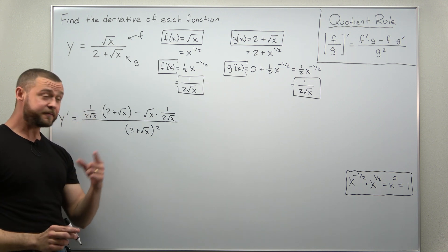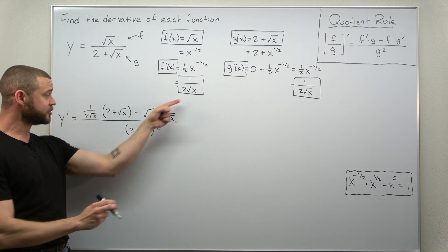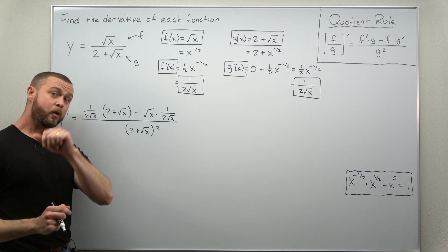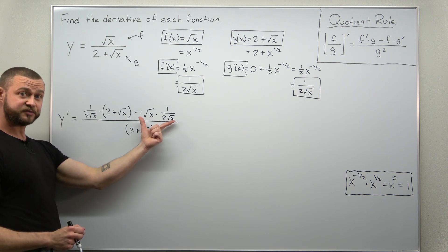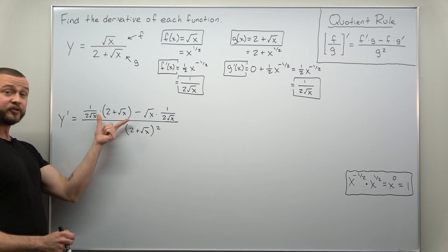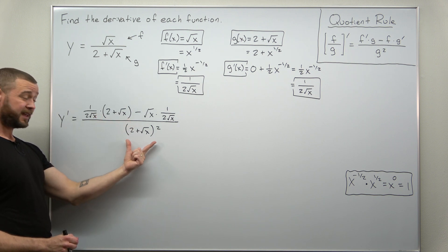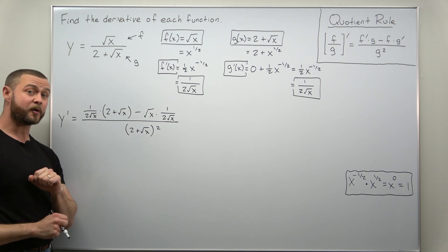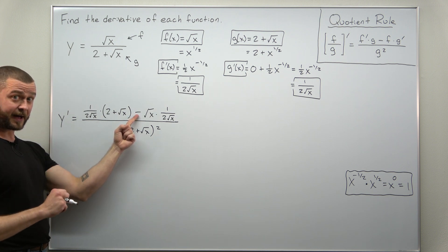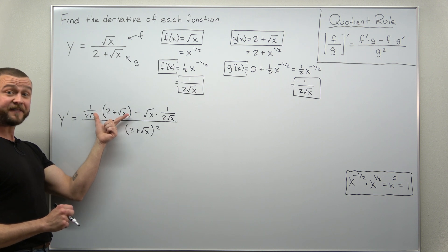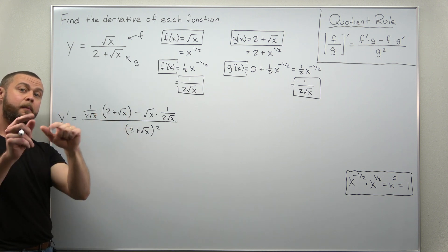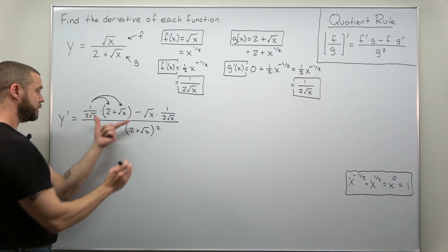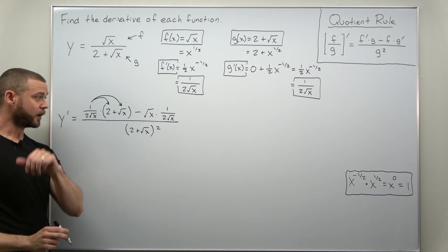Here you can see the benefits of rewriting f prime and g prime back as fractions, because those square root of x terms cancel out. Now we can simplify the numerator a little bit. Be careful — you have (2 plus square root of x) in the numerator and denominator, but (2 plus square root of x) is not a factor in the numerator because that minus sign is preventing it. So we cannot cancel a factor of (2 plus square root of x), but what we can do is distribute this fraction into the parentheses.